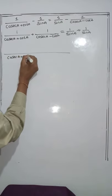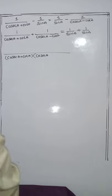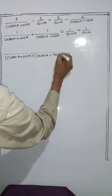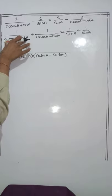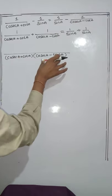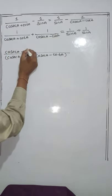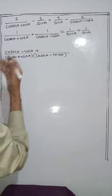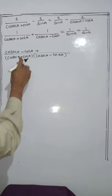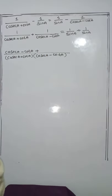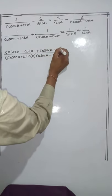Therefore, cosec A plus cot A multiplied by cosec A minus cot A gives the LCM in the denominator. For the numerator, cosec A plus cot A is present — so cosec A minus cot A is multiplied by 1, giving cosec A minus cot A. The sign is plus, so write plus. The next term: cosec A minus cot A has cosec A plus cot A as its factor, so write cosec A plus cot A directly.